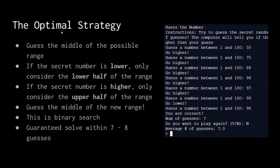The optimal strategy: you guess the middle, and if the secret number is lower, you only look at the lower half. If the secret number is higher, you only look at the upper half, and then you chop it in half again. For example, if my secret number was 75 — I guess 50, it says higher, so I consider 50 to 100, chop in half to check 75, and that was the right answer — only two guesses.